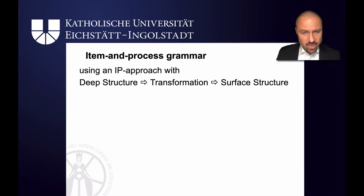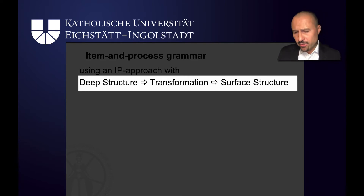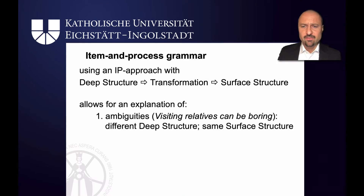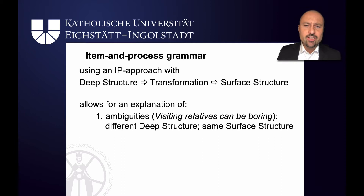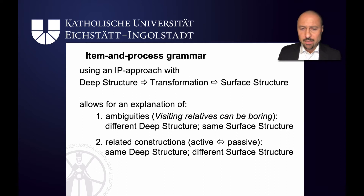While the details of the theory have changed over time, it's important to note that the transformational bit that changes the deep structure into surface structure is a purely syntactic one — a module of its own that's not affected by meaning at all. This approach allowed Chomsky an explanation of ambiguities like 'visiting relatives can be boring,' where it's either the relatives visiting you that are boring, or you visiting them, by having different deep structures for something that ends up with a similar surface structure. Also, it allows for an explanation of related constructions like active and passive, because these are assumed to have the same deep structure but end up in different surface structures because of transformations.